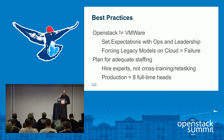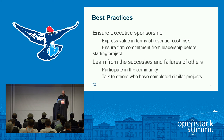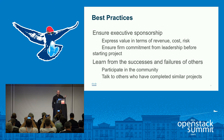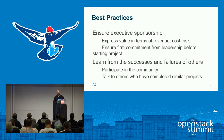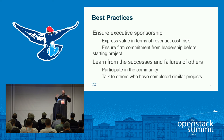Plan for adequate staffing. Hire experts — don't try to cross-train or retask existing staff unless you have truly exceptional full-stack engineers. Your general mid-level sysadmin or VMware admin won't be able to hack it. Production equals eight full-time heads at a minimum. Ensure executive sponsorship — express the value of OpenStack and private cloud in terms of increased revenue, reduced cost, and reduced risk. You need firm financial and executive commitment before starting. Finally, learn from the successes and failures of others: participate in the community, come to OpenStack summits, attend local meetups, and talk to other companies in similar industries who've completed similar projects.